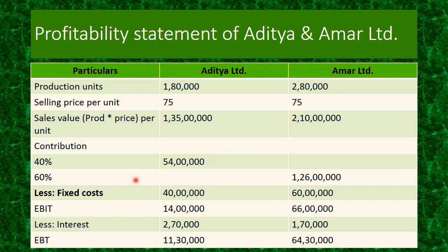That is your contribution. To get EBIT, we deduct fixed cost from contribution. So 54 lakhs minus 40 lakhs gives 14 lakhs for Aditya Limited, and 1 crore 26 lakhs minus 60 lakhs gives 66 lakhs for Amar Limited. These are your EBIT values.